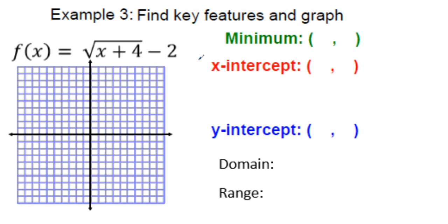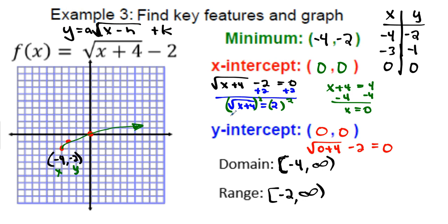Example 3 is yours to do — it's very similar to example 2. Pause the video and fill out all the key features and graph the function. The correct answers: minimum (vertex) is (−4, −2). The table uses the up-one, up-three pattern. The x-intercept and y-intercept both came out to be zero, which is the origin. Domain and range use the vertex values to start them off.